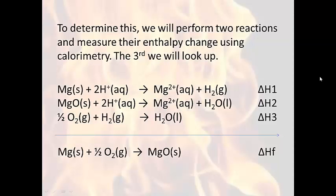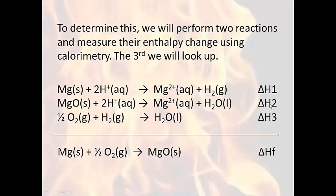So in our case, for this lab, we're going to determine the delta H of formation, which is the bottom equation — magnesium plus oxygen — going from elements to the compound. These are the equations we will use in Hess's law. You will need to manipulate them — either multiply by a factor or reverse a reaction — so that you can add them together and get the heat of formation of magnesium oxide. You'll need to do this for your pre-lab. We will be performing the first two equations experimentally. This last reaction we'll just look up, but we do need it to complete Hess's law.